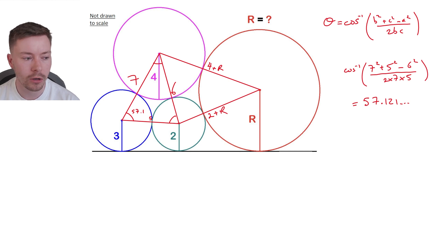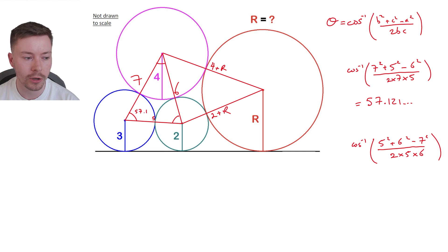I put that on my diagram. The next thing I wanted to do was work out one of the other angles. Then I used the values to find the bottom right angle of this left-hand triangle, which gave me 78.46 degrees. Then I used that to work out the top angle, which was 44.41 degrees.